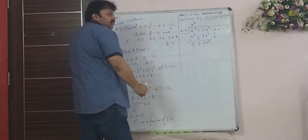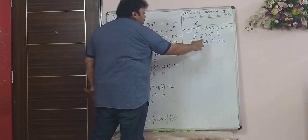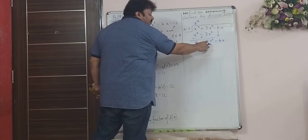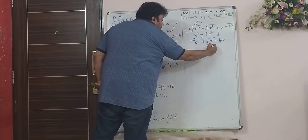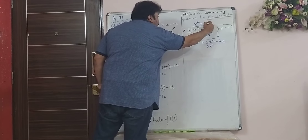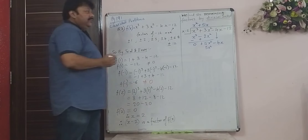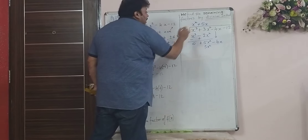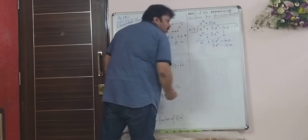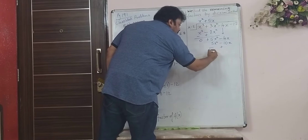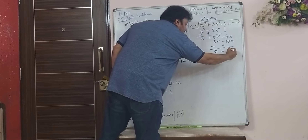Bring the next term down: minus 4x. To get 5x² here, the number you multiply with x must be 5x, because 5x into x gives 5x². Then multiply minus 2 with 5x: that is minus 10x. This has to be subtracted, so the sign changes — this becomes 0 and the next term becomes plus 6x.